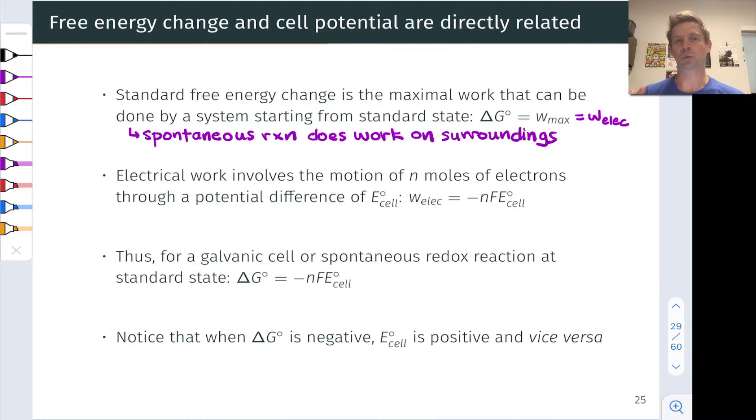Now what is electrical work? Well, in a redox reaction, we're moving n moles of electrons through a potential difference that corresponds to E°_cell, the standard cell potential. And so the electrical work, W_elec, is equal to the charge times the potential difference. And we saw this earlier when we defined potential difference as the ratio of energy or work to charge. This is just that equation rearranged.